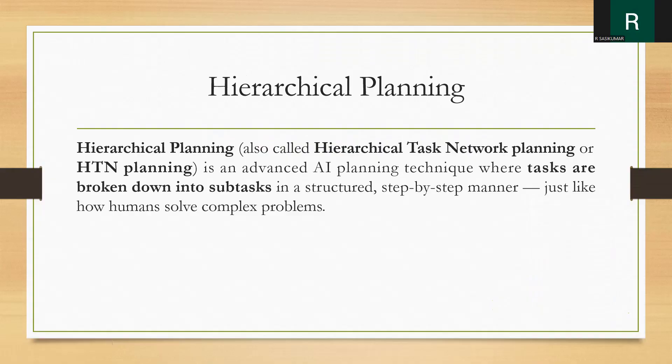Hierarchical Planning in AI is also called Hierarchical Task Network Planning, or HTN Planning. It is an advanced AI planning technique where tasks are broken down into subtasks in a structured, step-by-step manner, just like how a human solves a complex problem. Simply put, tasks are divided into N number of subtasks in a structured step-by-step manner in order to solve a complex problem.